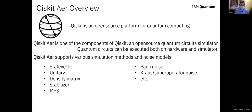Qiskit Aer is one of the components of the open source quantum computing platform, Qiskit. Qiskit Aer is a quantum circuit simulator that runs on classical computers. It supports various types of simulation methods: state vector simulation, unitary, density matrix, stabilizer, and MPS. We usually use the state vector simulator as the standard simulation method. The stabilizer and MPS methods are used for large-scale circuit simulation, but the quantum circuits are very limited for use with these simulators. Qiskit Aer also supports various types of noise models that behave like actual quantum computers.